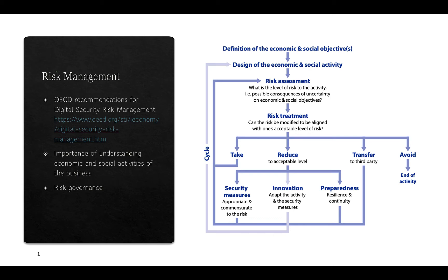The organization then treats that risk by taking the risk, reducing it, transferring it, or avoiding it. In the reduction of risk, controls are implemented through security measures, innovating to reduce risk by changing the process or activity, and preparing for incidents by establishing resilience and continuity. There is then a process for monitoring and assessment of those controls and risks as they evolve, because business activities, equipment, risk profiles, and threats are constantly changing — making this a continuously evolving cycle.